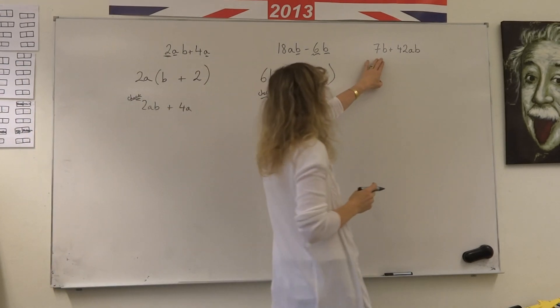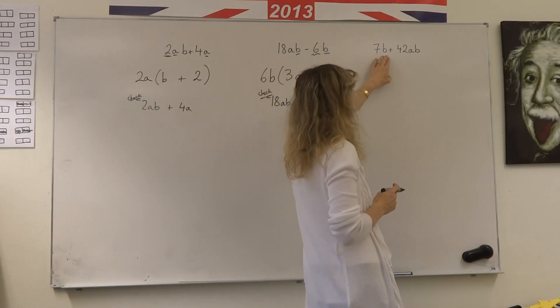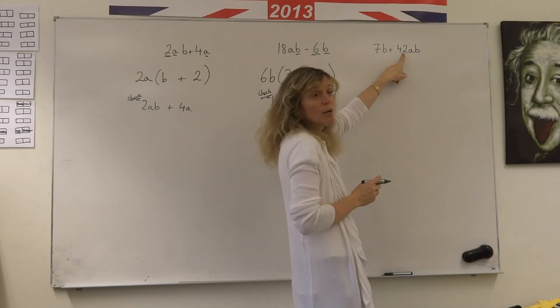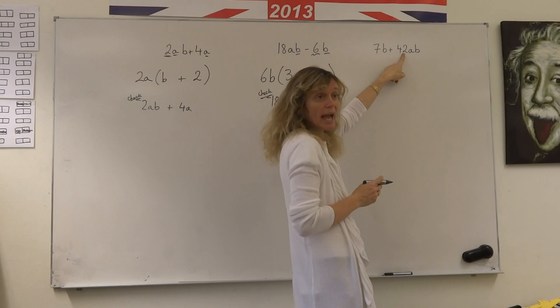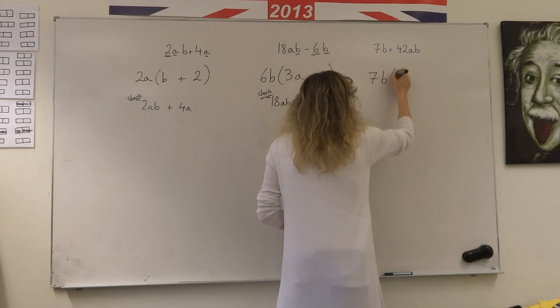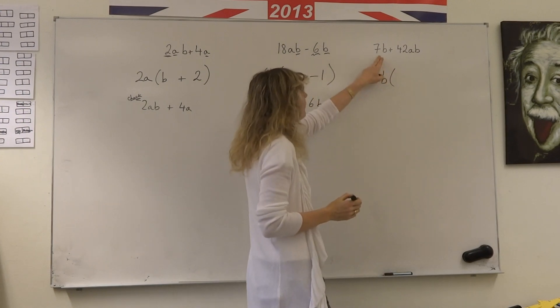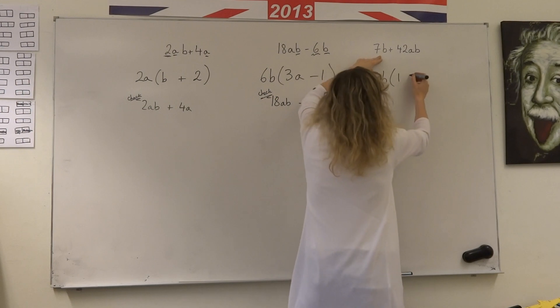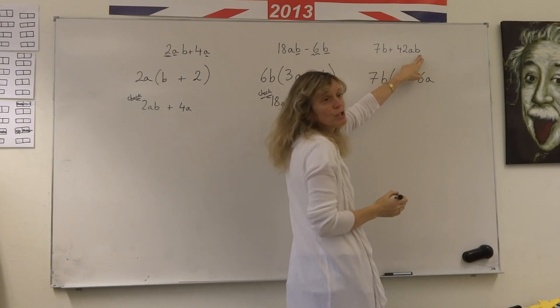Let's have a look here. It would be nice if I could take 7B outside here. B is in both of them and 42 is a factor of 7. So I can take out 7 out the front. 7B multiplied by 1 would give me 7B.